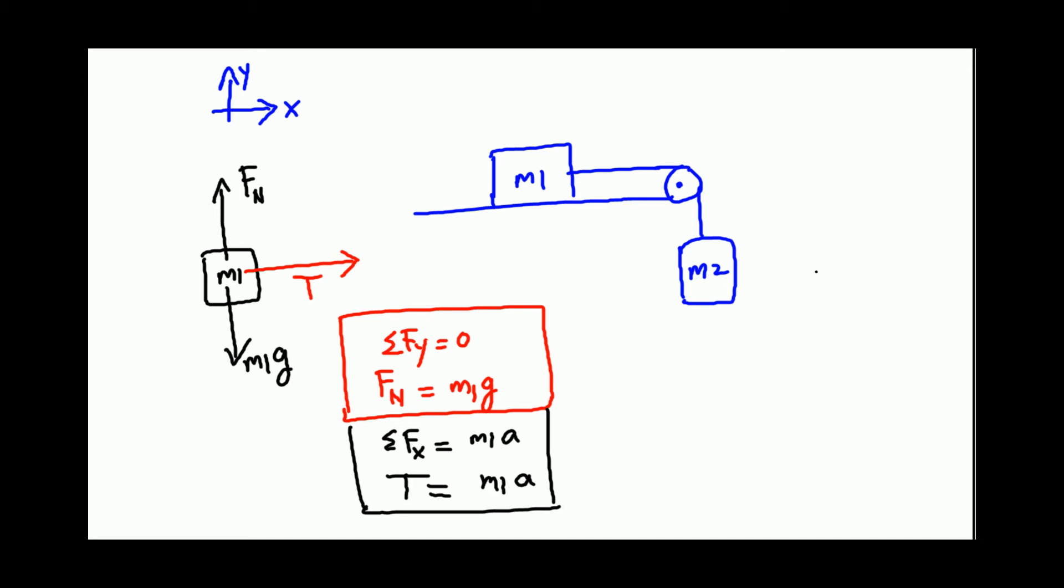Now on the right side, we can isolate mass m2 and we have the same tension, and then we have a bigger gravitational force.